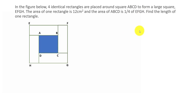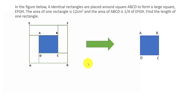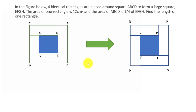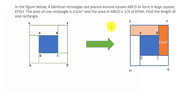Let's try to understand this problem by deconstructing it. How did this figure form? Basically we have a square ABCD and this square is covered on all four sides with identical rectangles. Four identical rectangles form another square EFGH. The area of one rectangle is 12 cm², and the same goes for the other rectangles as well because all these rectangles are identical.